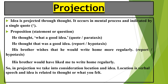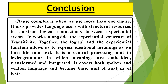Then we have idea. Idea is projected through thought — through your feelings, what we felt or think. It occurs in mental process, whereas locution occurs in verbal process. Idea is indicated by a single quote. Example — proposition: 'He thought, "What a good idea!"' — this is a quote in parataxis. 'He thought that was a good idea.' — this is report in hypotaxis. So in projection we take into consideration locution — verbal speech — and idea, which is what you feel or think.